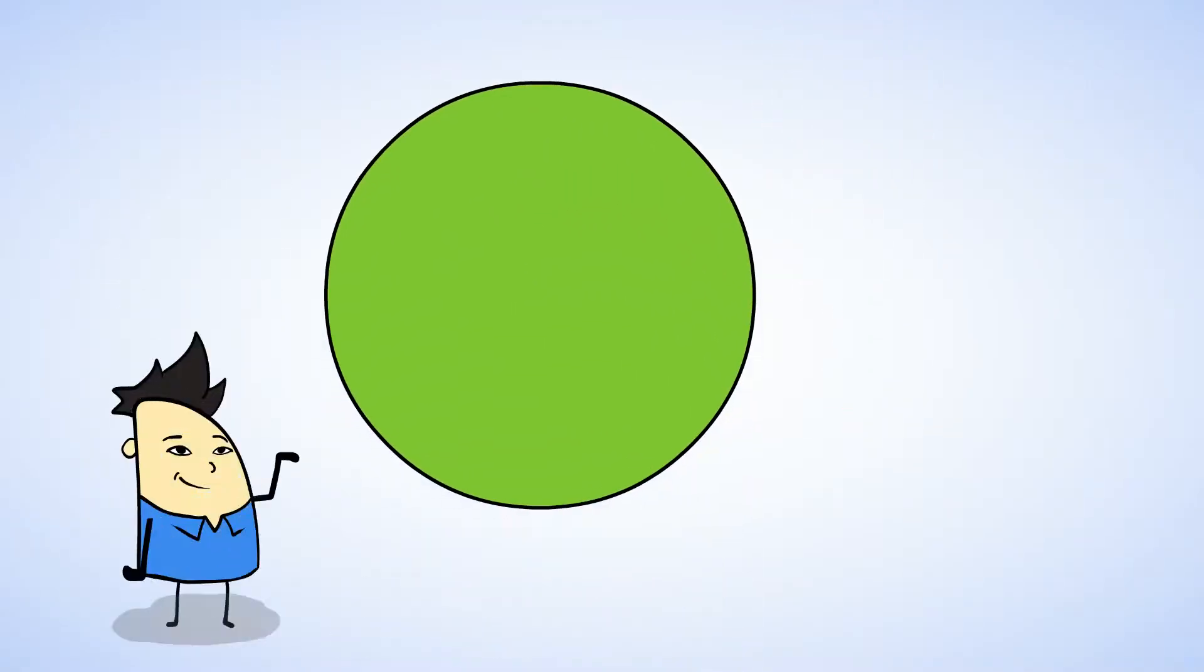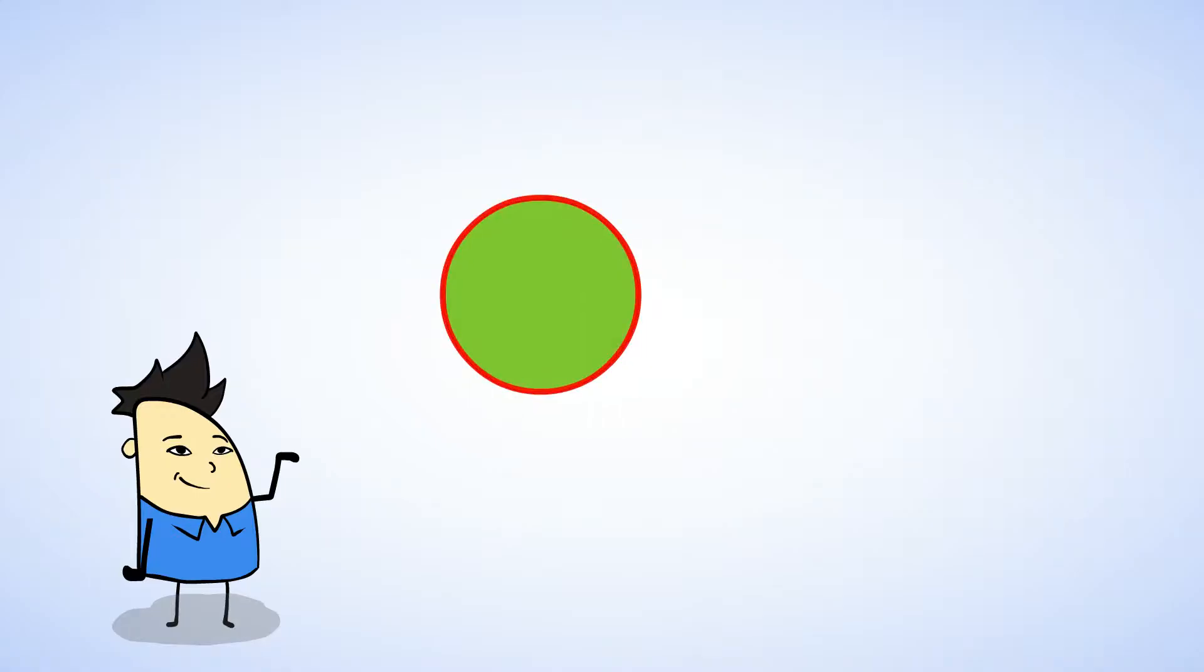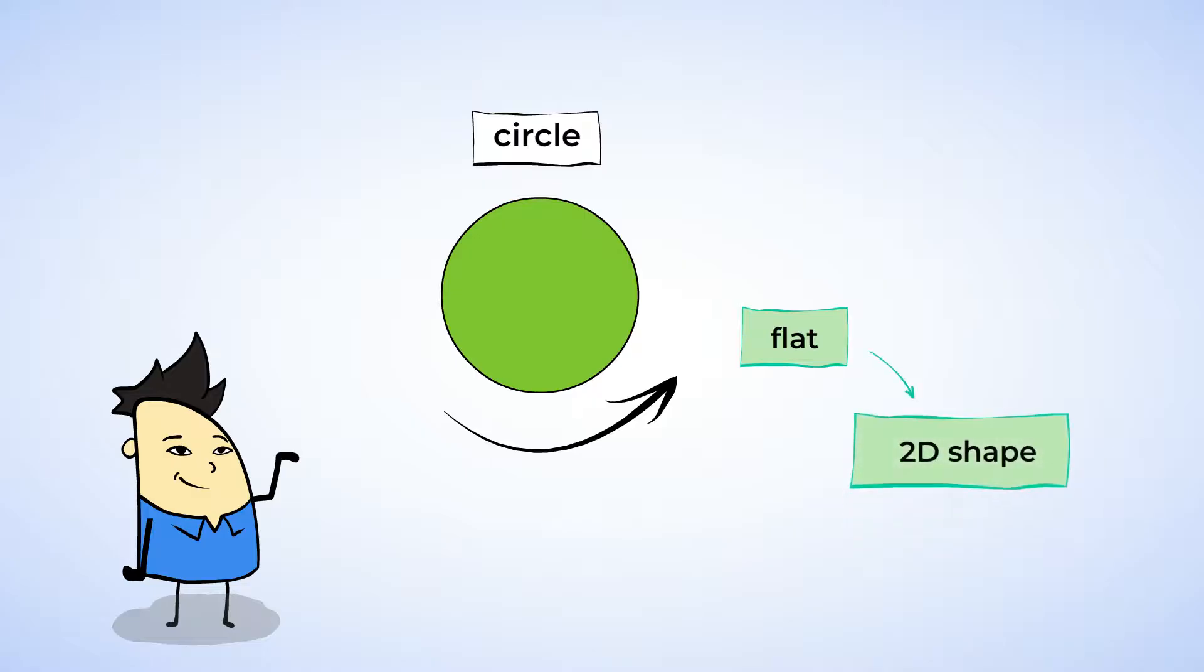And what about this shape here? Well, this shape is curved. In fact, it's round all the way around. And if we turn it, it looks the same. So the shape doesn't have a back. It's flat. And that means this is a circle. A circle is a 2D shape.